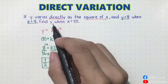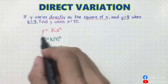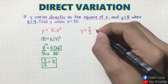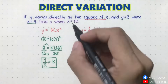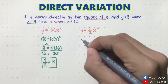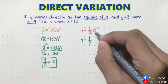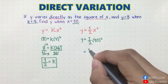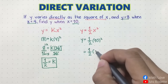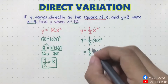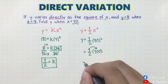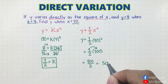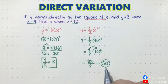Now we will use this value of the constant to solve for y when x is equal to 10. We'll go back to the equation and change k to 1 half. So y is equal to 1 half times x squared. Substituting x equals 10: y equals 1 half times 10 squared, which is 1 half times 100, giving us 100 over 2, which equals 50. So y is equal to 50 when x is 10.